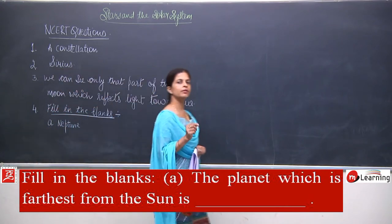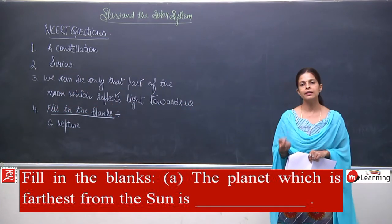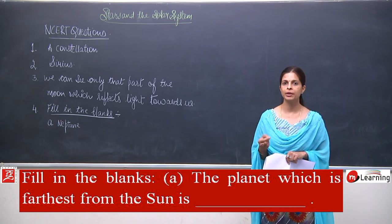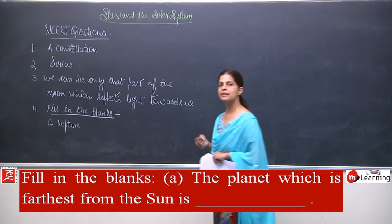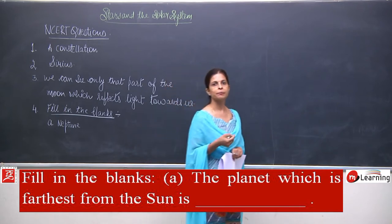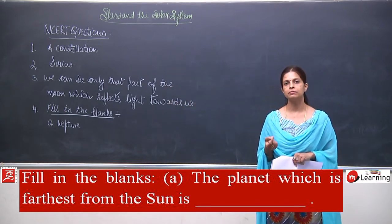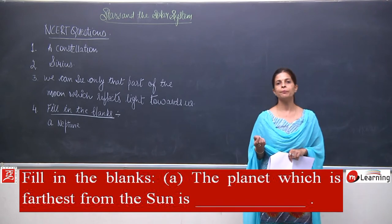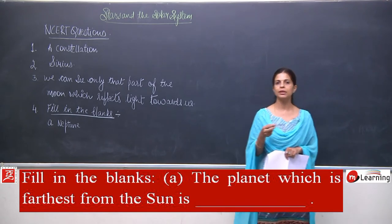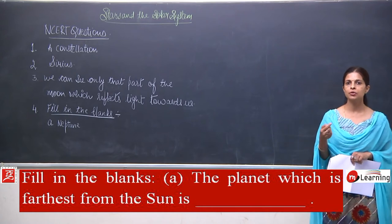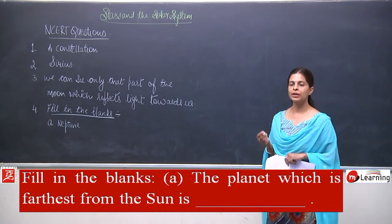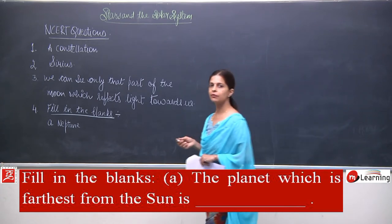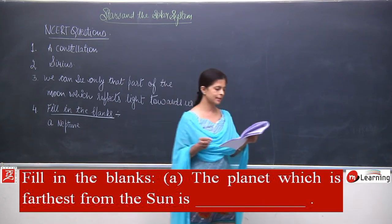Some important facts: the nearest planet to the sun is Mercury; the hottest planet is Venus; the biggest planet is Jupiter; the planet famous for its rings is Saturn; the red planet is Mars; the planet with life is Earth; the farthest planet is Neptune; the dwarf planet is Pluto. The nearest planet to the Earth is Venus, and even Mars can be said.